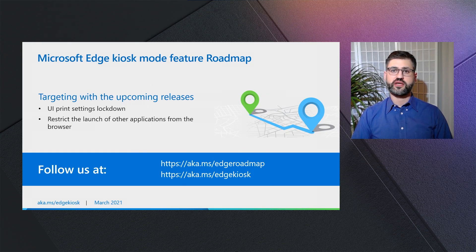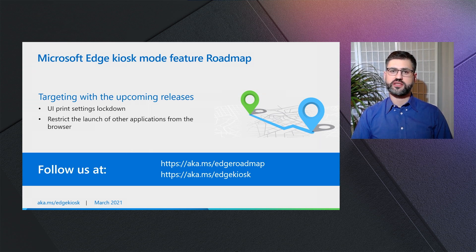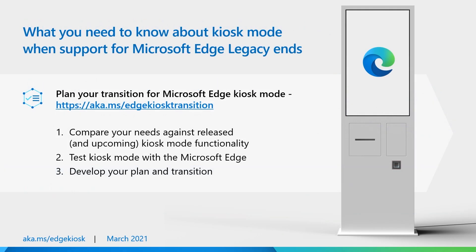Now let's see what is next. With upcoming Edge releases, we are targeting additional features like locking down the UI print settings, restricting the launch of other applications from the browser, and additional features for parity with Microsoft Edge legacy. You can follow updates using the M365 roadmap for Edge or the Edge Kiosk documentation. In case you haven't heard, changes are coming to Microsoft Edge legacy — in February, we released a blog with details about the end of support for Microsoft Edge legacy. Documentation to support your transition plan is available at aka.ms/edgekiosk-transition.